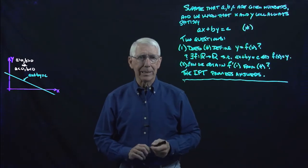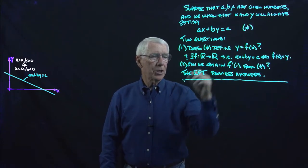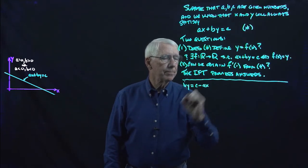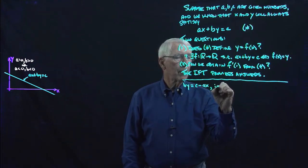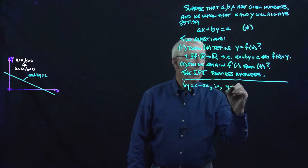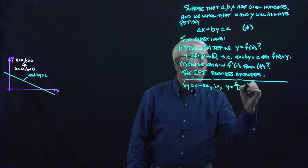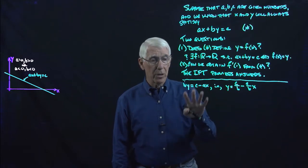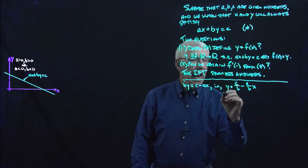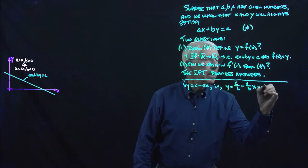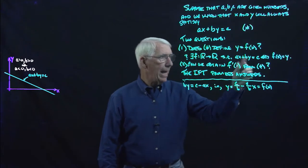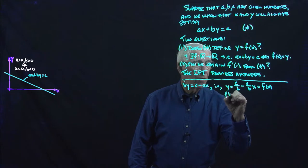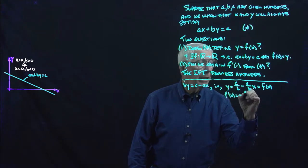Let's do that down here. We have this equation; I could rewrite it as BY equals C minus AX. And we could rewrite that as Y equals C over B minus A over B times X, so long as B is not zero, because I can't divide through if B is zero. If B is not zero, we can do this, and this would be our function giving us Y as a function of X — an explicit function. The derivative of that function is clearly going to be minus A over B.